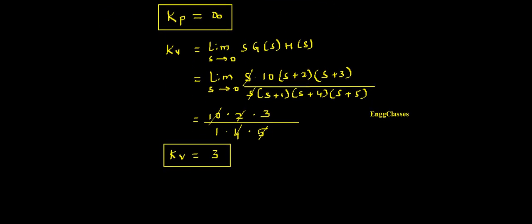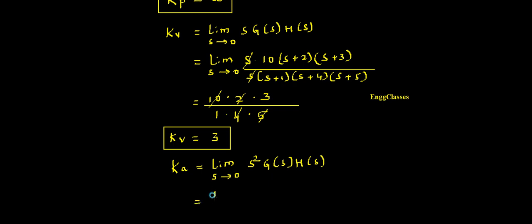If I move further I have to find Ka, the acceleration error constant. The formula is: Ka = limit as s tends to 0 of s²·G(s)H(s). To find the answer for Ka I should know this formula. So limit s tends to 0, s² into G(s)H(s), substituting: 10(s+2)(s+3) in the numerator.